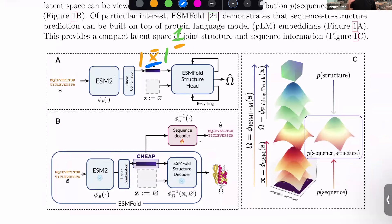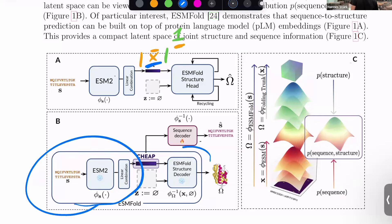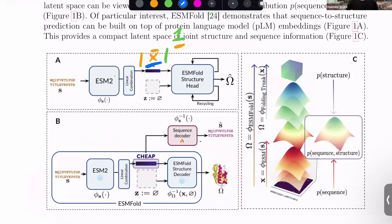If we have such a language model, we can do DPO directly on it — instead of doing DPO on a diffusion-based structure generative model like RFdiffusion, where DPO is finicky and may not give benefits. Here we could directly use preference optimization to optimize a sequence-structure generative model for experimental success in binding assays, or to generate structures with high enzymatic activity for reactions where you have some experimental data.